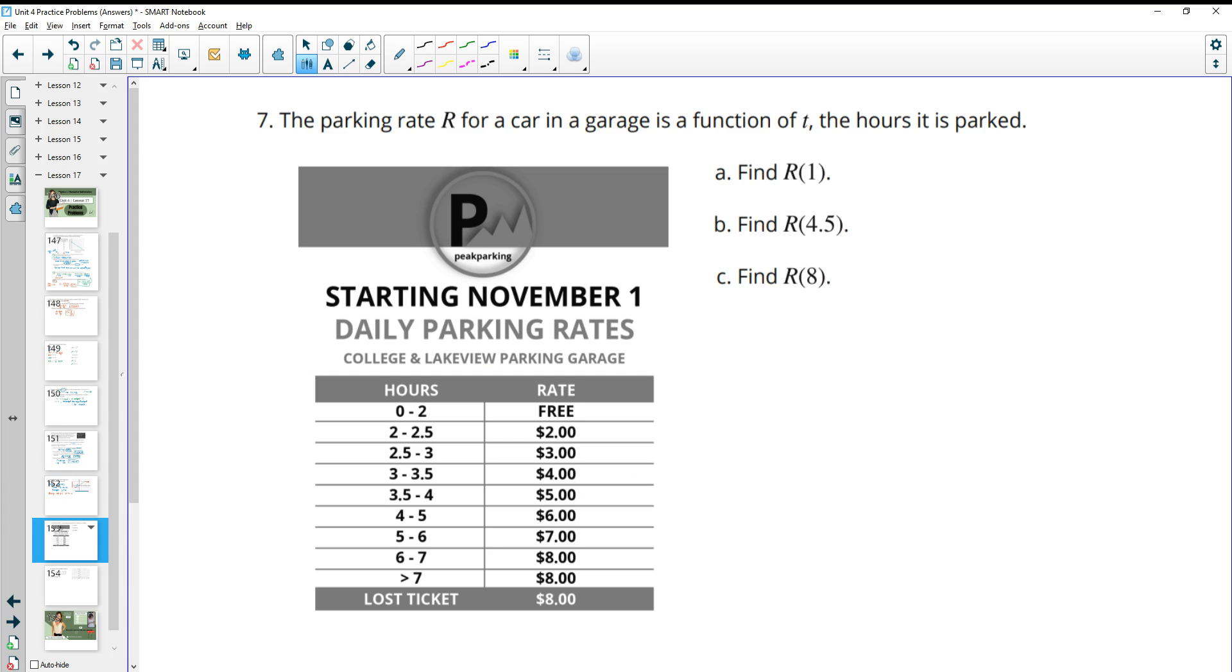Number 7, the parking rate for a car in a garage is a function of t, the hours it is parked. Find r(1). So if the hours are 1, it's in this chunk here. So then this would be free. If it's 4 and a half hours, it's between 4 and 5 hours. That's $6. If it's 8 hours, it's more than 7 hours. So then that's going to be $8.